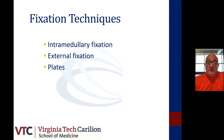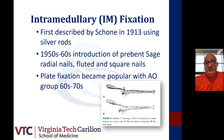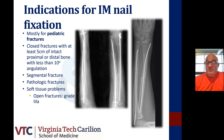Intramedullary fixation was first described by Schöne in 1913 using silver rods, then modified in the 1950s and 60s with the introduction of pre-bent Sage radial nails — fluted and square nails. AO popularized plate fixation in the 60s and 70s, and IM nailing fell out of favor. The indications for IM nail in current practice are mainly pediatric fractures, but also segmental fractures and pathologic fractures. Requirements include at least 5 centimeters of intact bone proximally or distally, and less than 10 degrees of angulation.